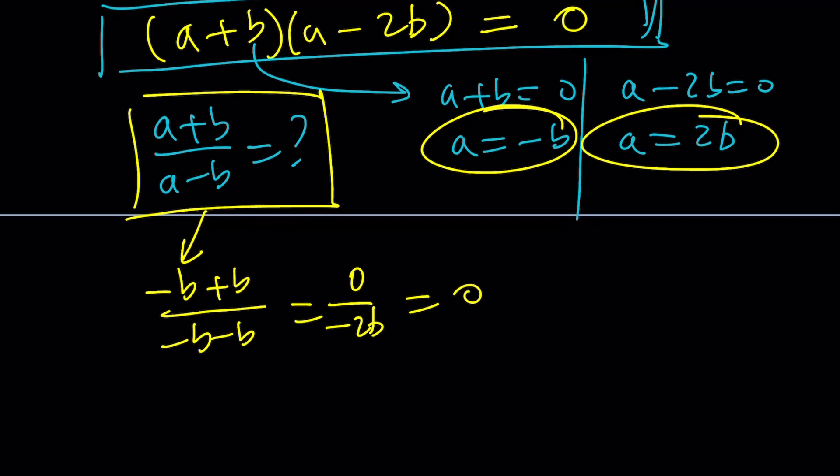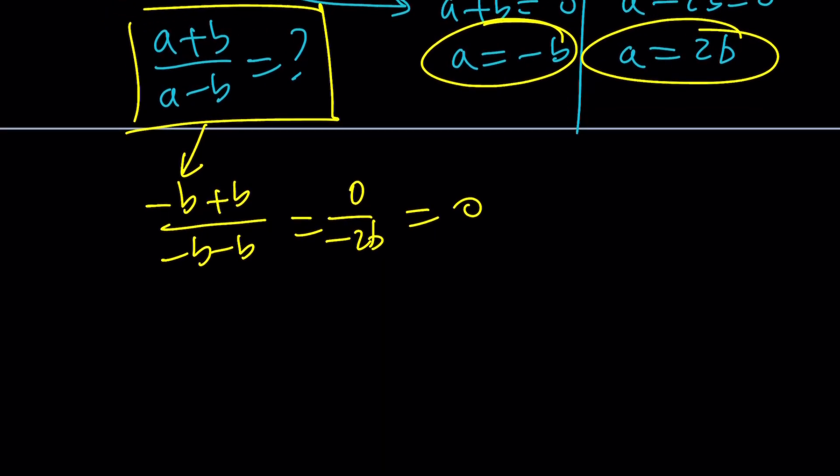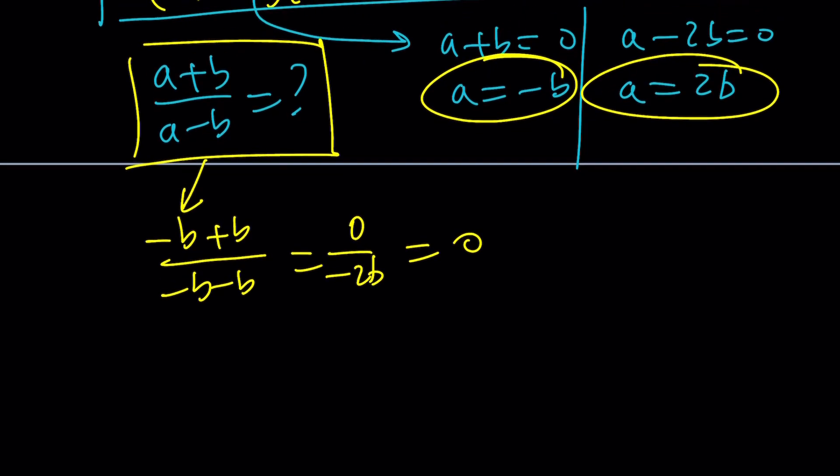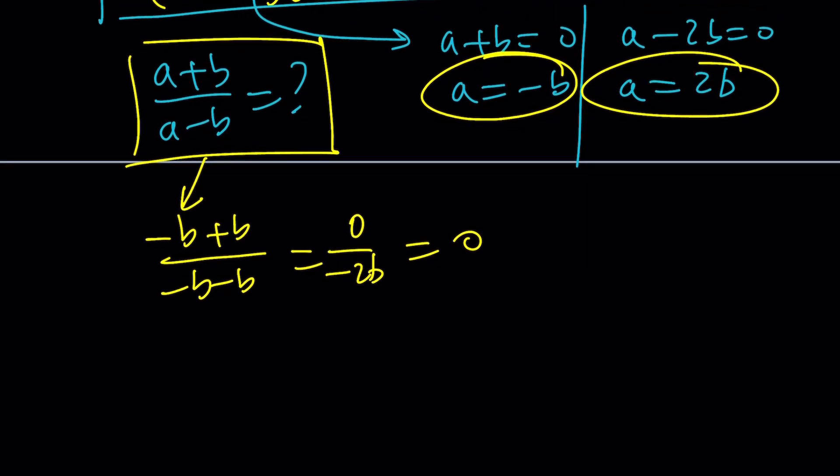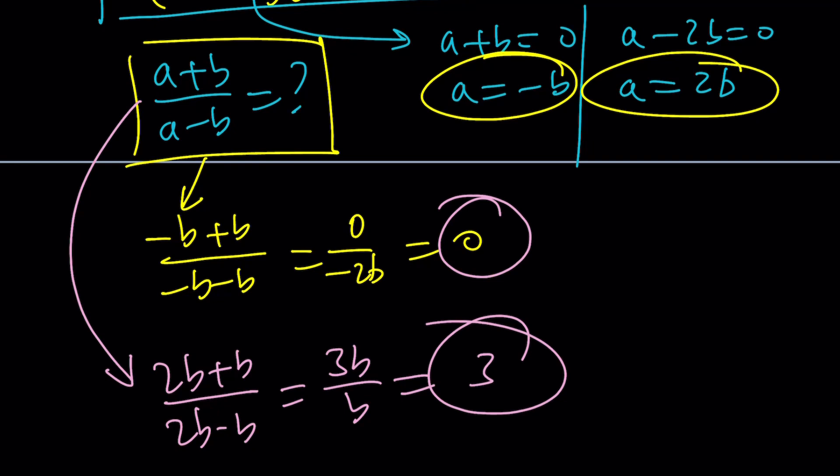Let me tell you something. If b is 0 in the original problem, a is also going to be 0. So we can't really talk about this ratio anymore. So they should be different from 0. The second solution, a minus 2b equals 0, gave us a equals 2b. So we replace a with 2b. That's going to give us 3b over b, which is 3. So there are two solutions, 0 and 3, for a plus b over a minus b.